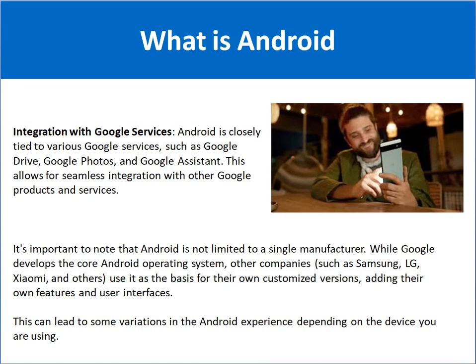It is important to understand that Android is not limited to a single manufacturer. Google is the main developer of the core Android operating system; however, other companies like Samsung, LG, Xiaomi, and various Chinese companies are also using Android to make their devices — especially mobiles, tablets, and smartwatches. They use Android with their own feature sets, customized versions, and unique user interfaces. This leads to some variations in the Android experience depending on the device you are using, so you will notice differences in the user interface between Samsung, LG, or Xiaomi devices.